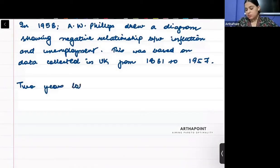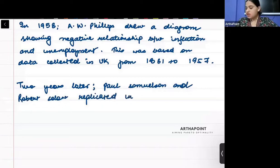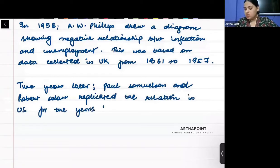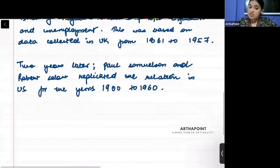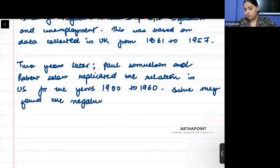Two years later, Paul Samuelson and Robert Solow replicated the same relation in the US for the years 1900 to 1960. Since they found the same negative relation, they named it the Phillips curve.